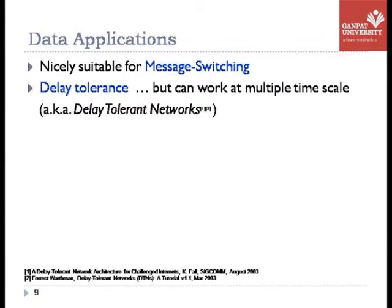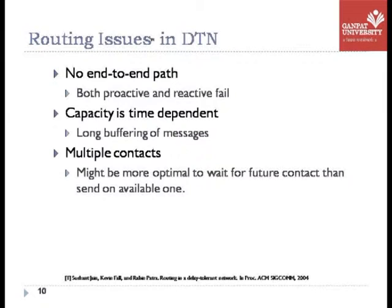That network we term as a Delay Tolerant Network (DTN). When transferring messages from source to destination in DTN, we have to understand certain challenges. The very first challenge is there are no end-to-end paths, and since there are no end-to-end paths, both proactive and reactive schemes will fail. Ad hoc network routing protocols cannot be utilized in this environment.